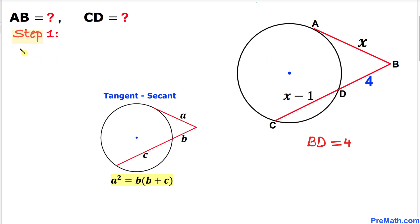Let's go ahead and apply this rule to our given problem. So that could be written as, on the left-hand side, x squared equal to 4 times 4 plus x minus 1. Before we proceed, in order to calculate the value of AB and CD, we must find the value of x first.